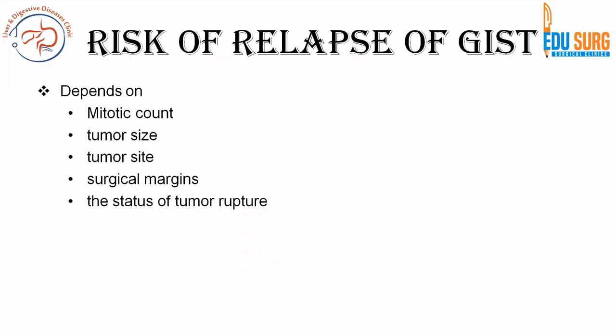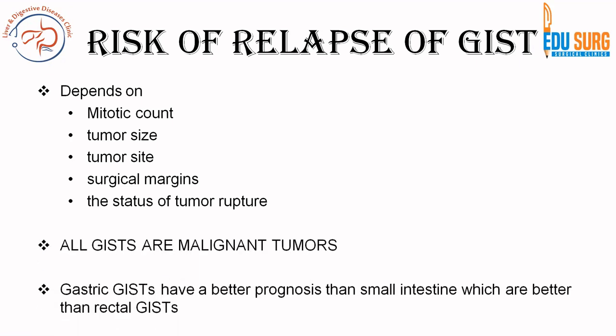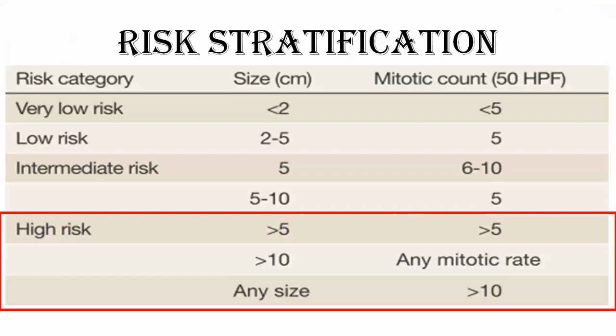Risk depends on the mitotic count, the size of the tumour, and the site of the tumour. Gastric GIST have better prognosis than small intestinal, which has better prognosis than rectal tumours. All GISTs are malignant tumours, but mitotic count, size, and site are the parameters which help in giving the risk stratification.